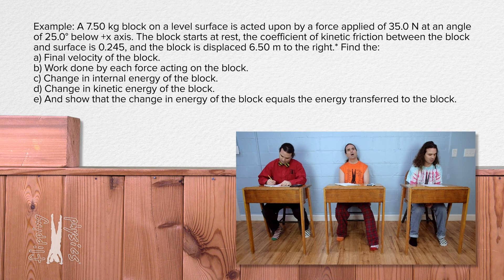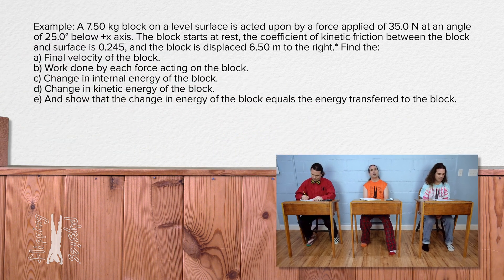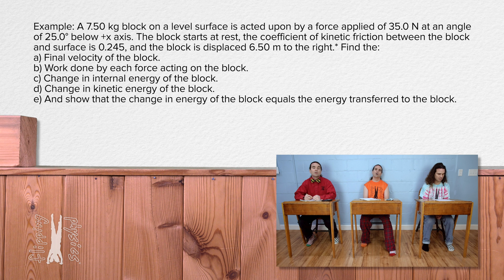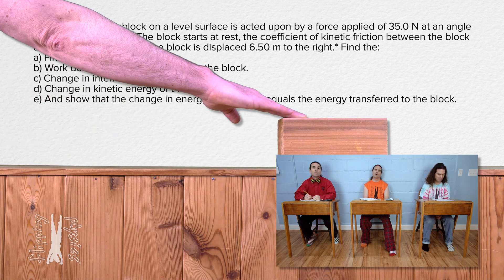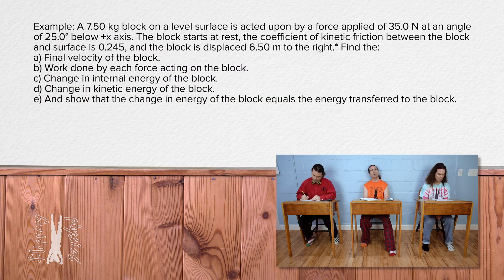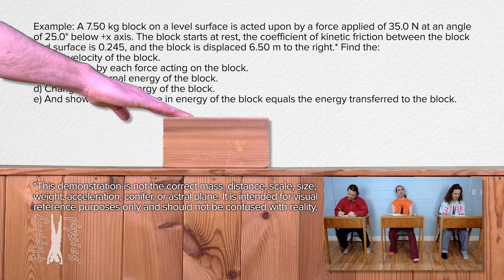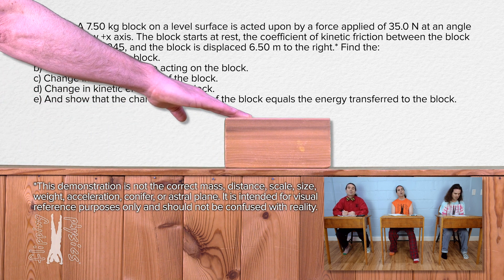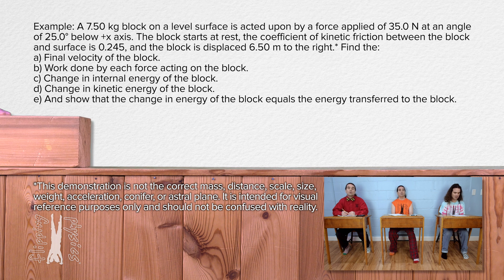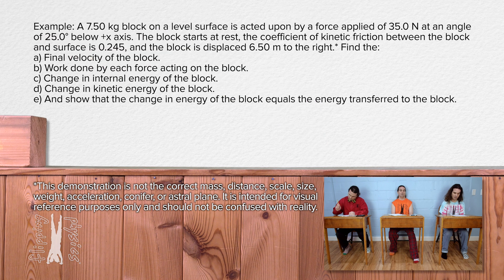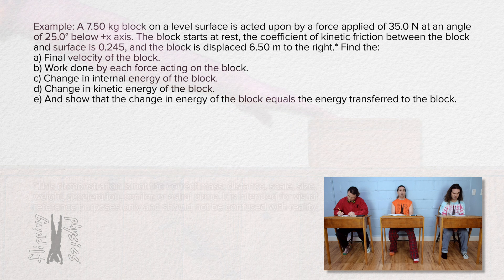A 7.50 kilogram block on a level surface is acted upon by a force applied of 35.0 Newtons at an angle of 25.0 degrees below the positive x-axis. The block starts at rest. The coefficient of kinetic friction between the block and surface is 0.245 and the block is displaced 6.50 meters to the right. Find part A the final velocity of the block, part B the work done by each force acting on the block, part C the change in internal energy of the block, part D the change in kinetic energy of the block, and for part E show that the change in energy of the block equals the energy transferred to the block.